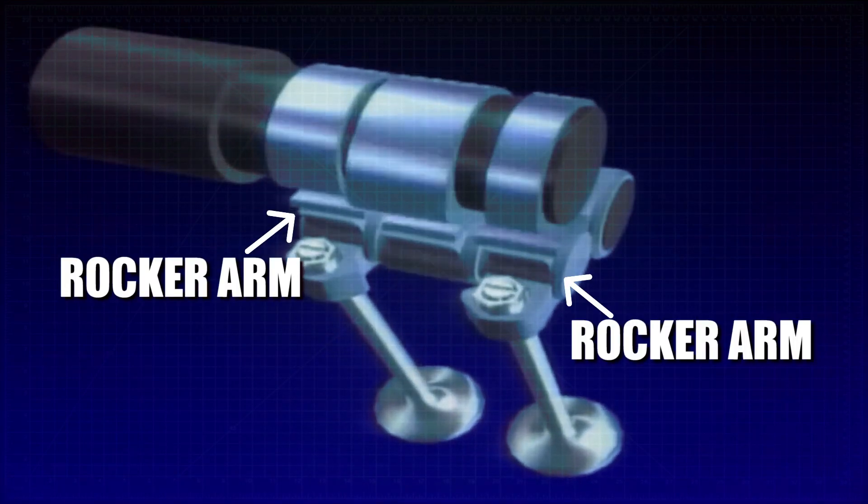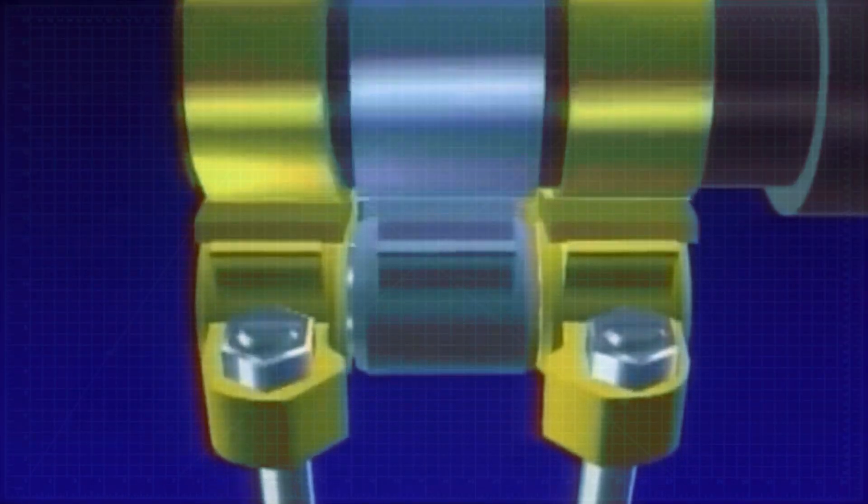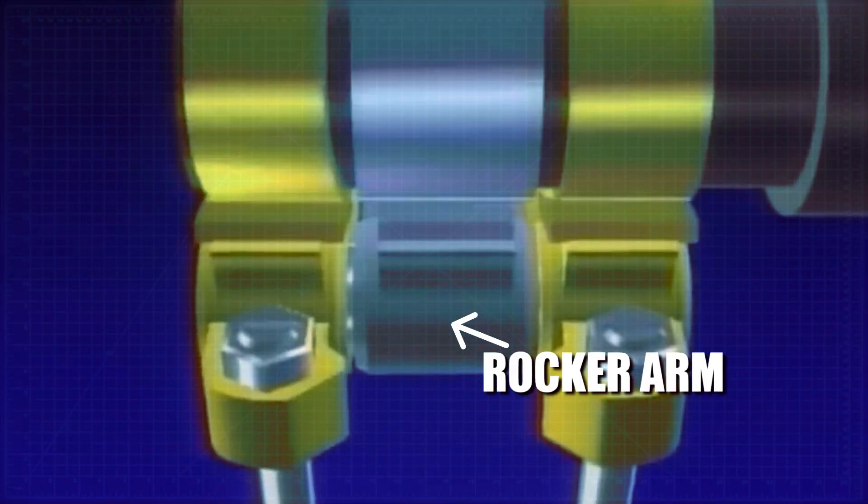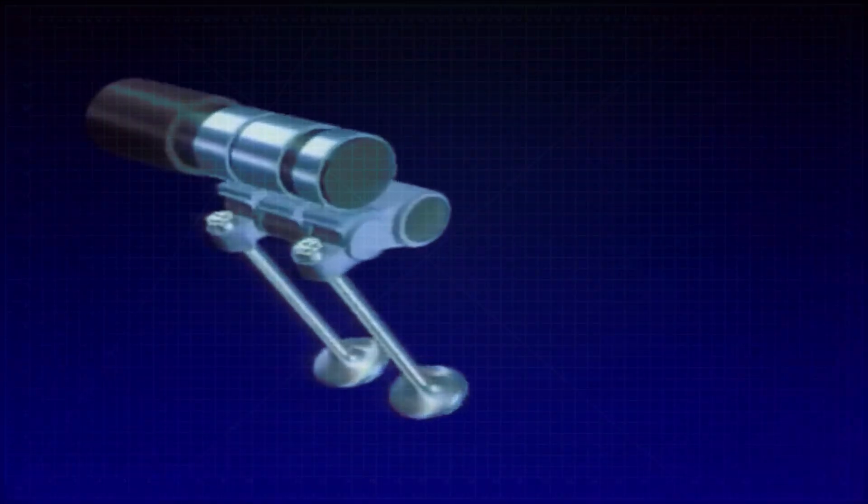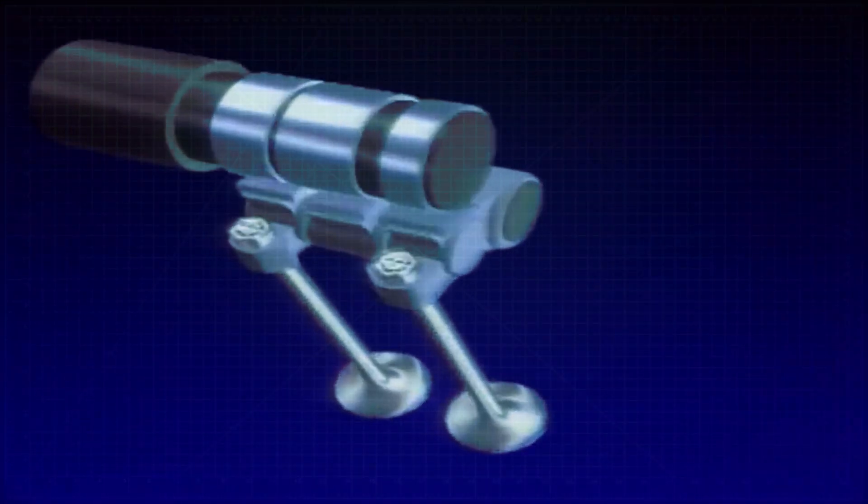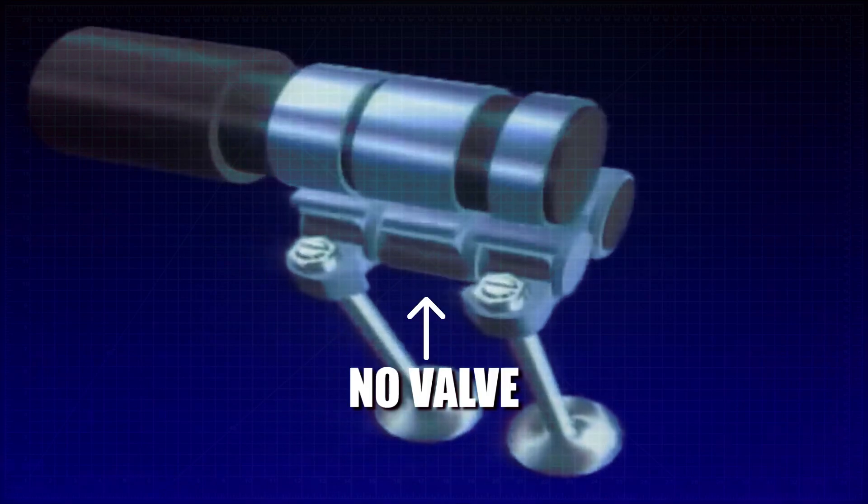But in a VTEC engine, there is an additional rocker arm that lives between the original ones. The main difference is that this additional rocker arm does not have a valve associated with it like the other arms do. Also, it appears not to have any purposeful function. More on this later.